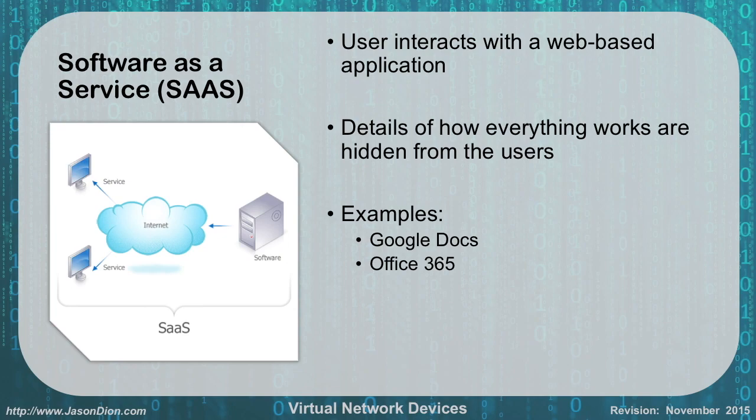Software as a Service is where the user interacts with web-based applications instead of physical applications on their device, and the details of how everything works are hidden from users. Good examples are Google Docs and Office 365. Instead of having Office installed locally, you pay an annual fee and use it through a web-based interface — getting Microsoft Word, PowerPoint, and Excel in the cloud, constantly updated and secured by Microsoft, with documents stored in the cloud as well.